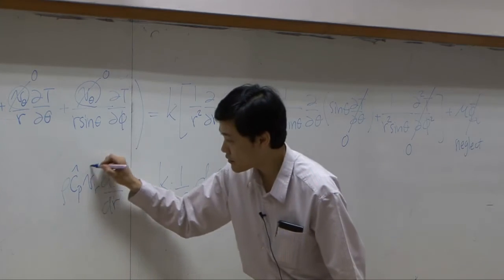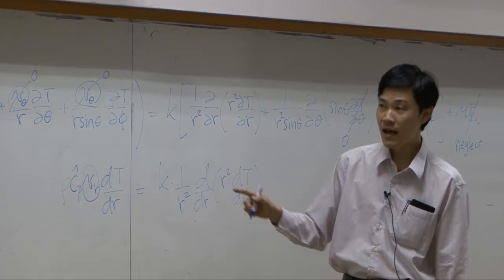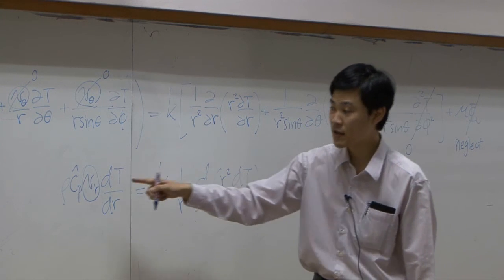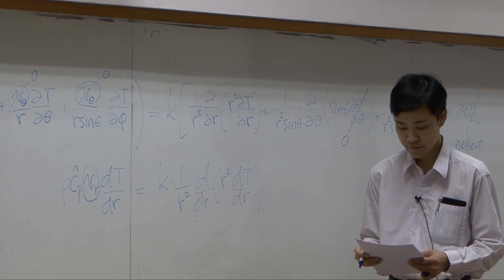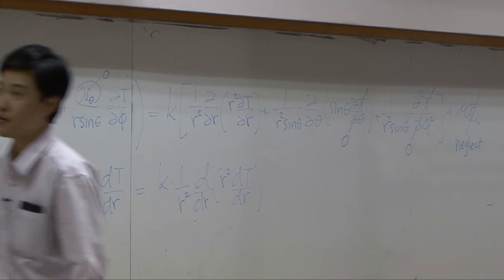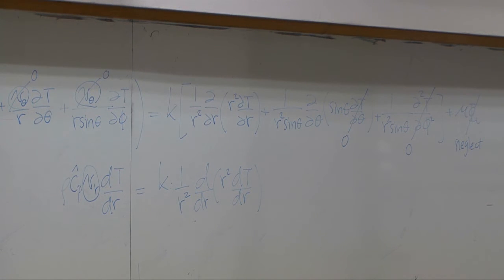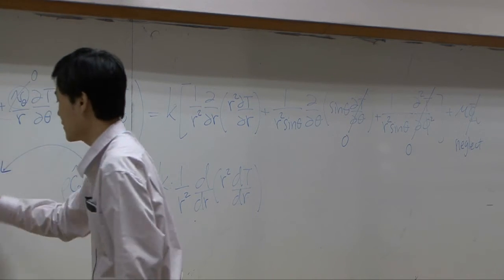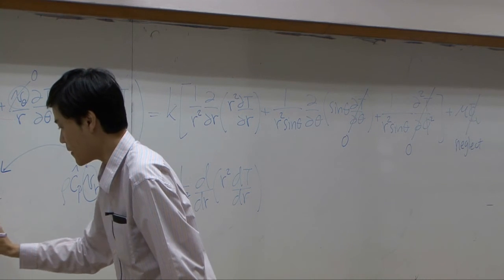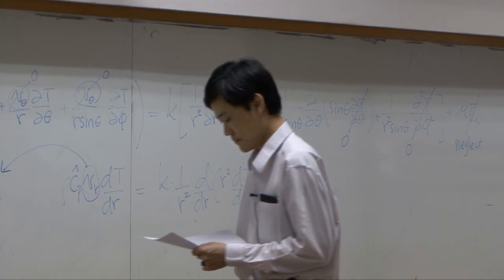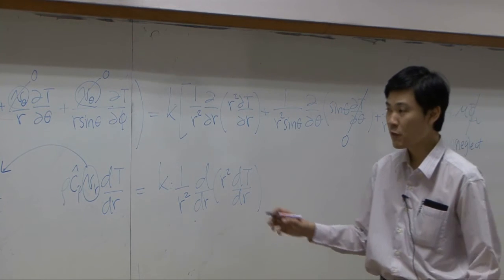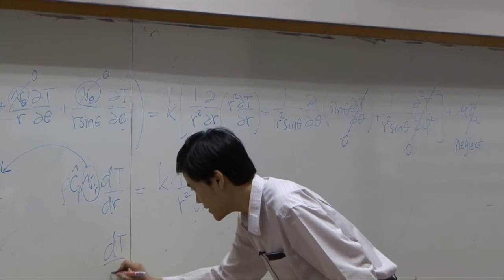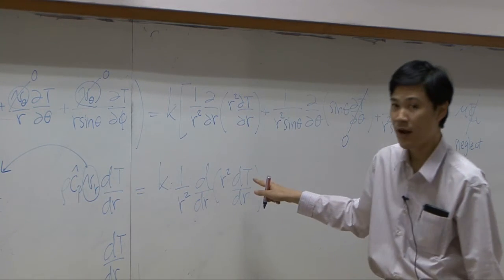The problem is Vr. Now Vr is a function of R. How can we represent Vr in this equation? We use the same trick: Vr depends on mass flow rate over 4*pi*rho*r². So Vr equals mass flow rate over 4*pi*rho*r². If you rearrange the equation again, you get dT/dr with everything else on the right-hand side.